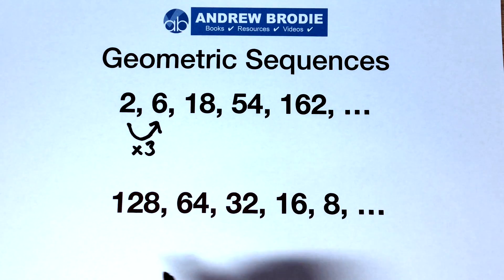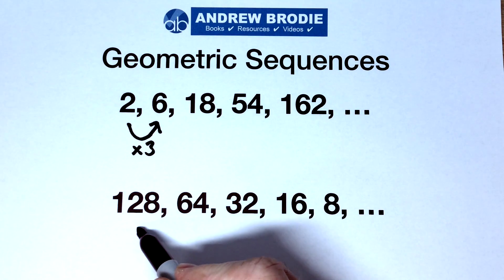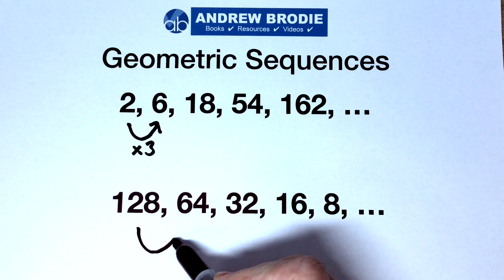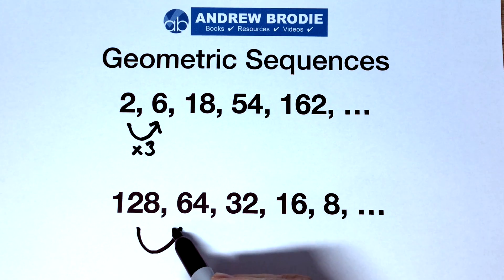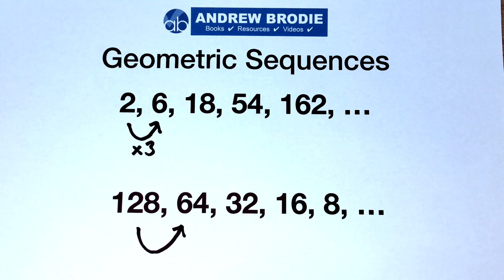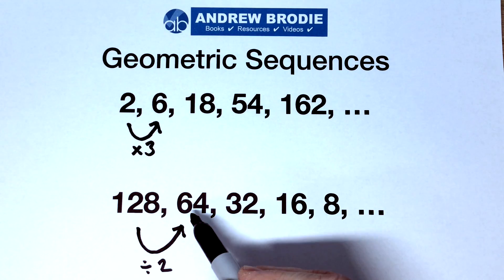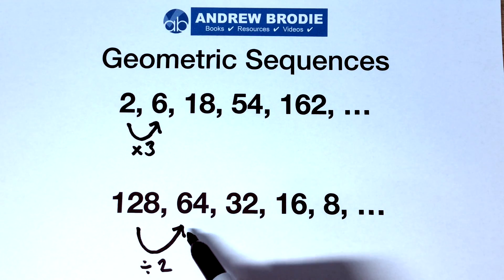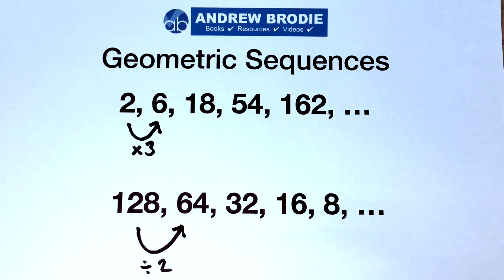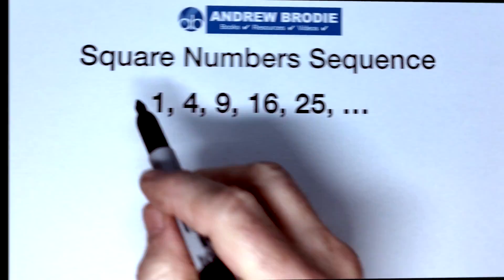This one is going down by a constant divisor, so we're dividing by 2 every time. 128 divided by 2 is 64, and so on.